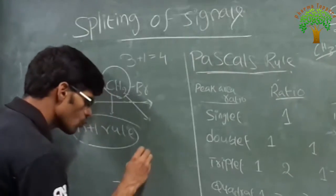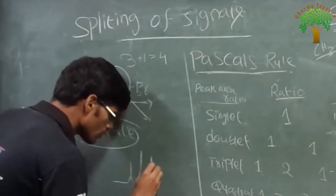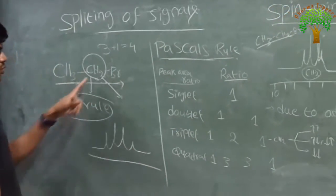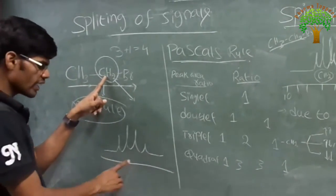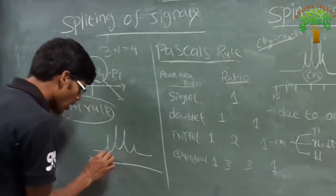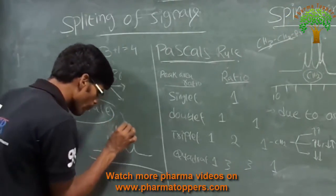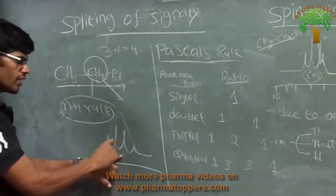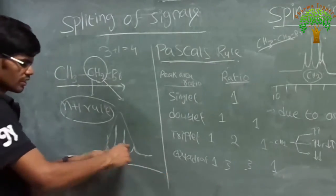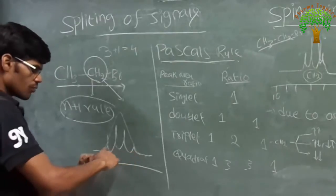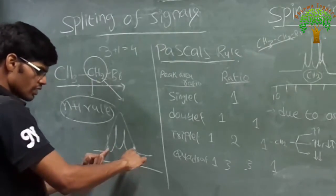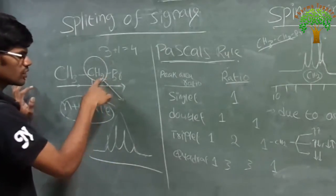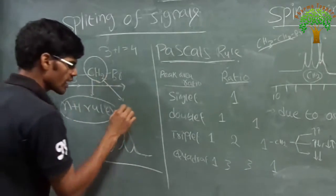1, 2, 3, 4. So this CH2 peak — this is actually a single peak — it will divide into multiple peaks. The area under the curve of each of these poles is similar. So this CH2 will give a quadruplet.